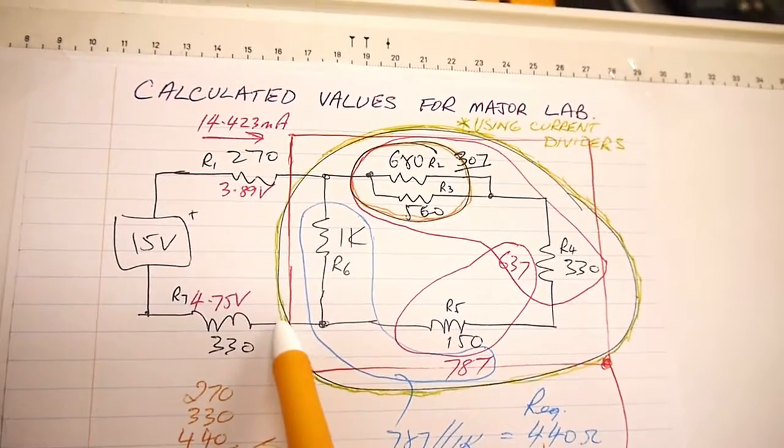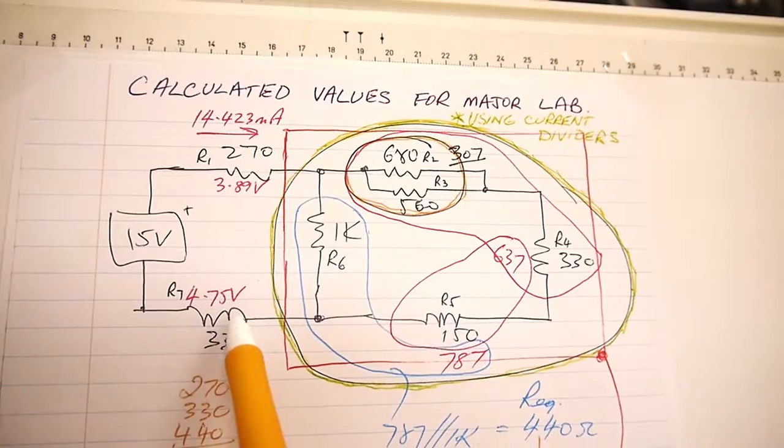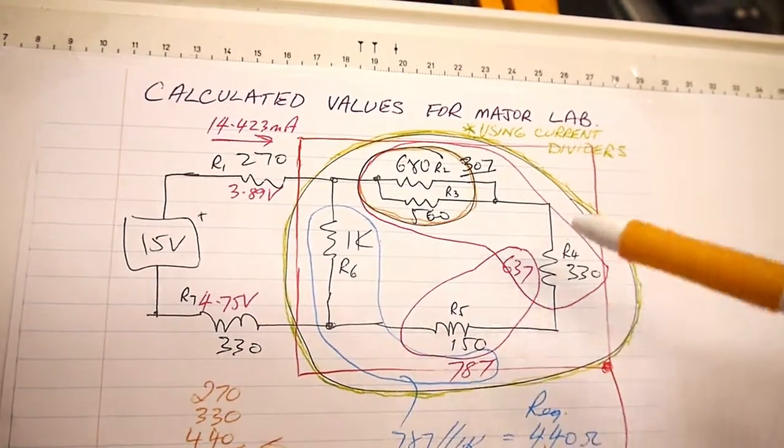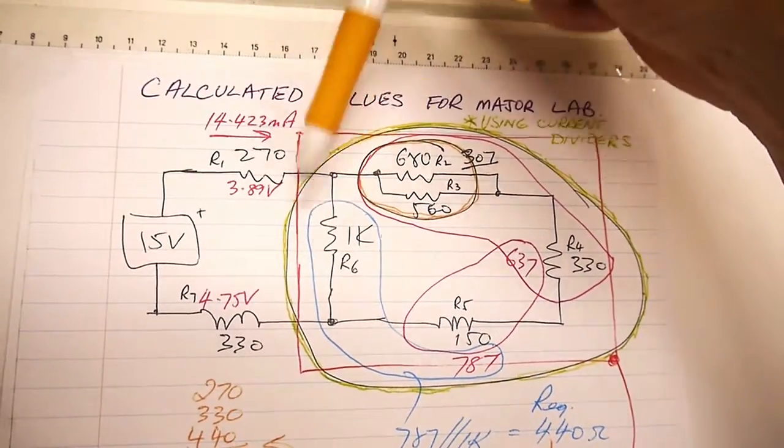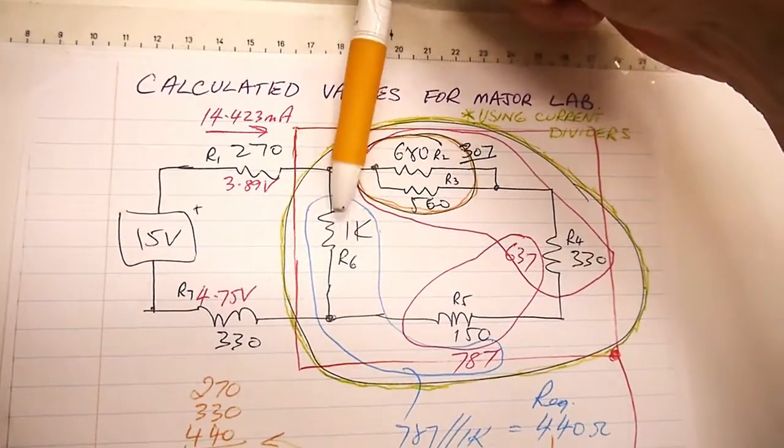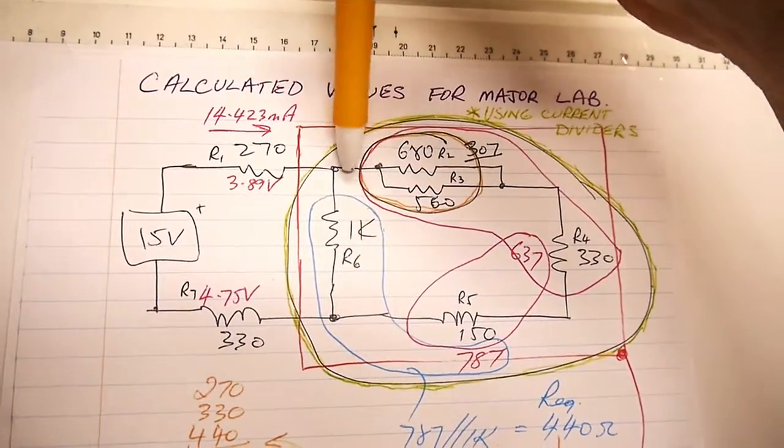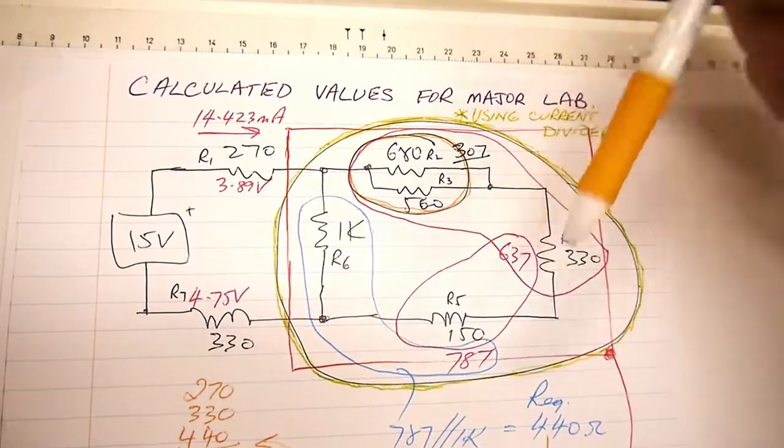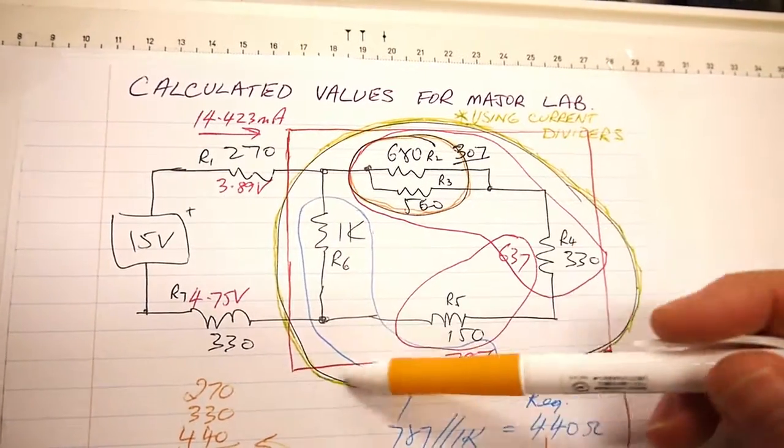We've got one lot of current splitting from this first node, splitting down through the 1k and one lot splitting and going into this other part of the network over here. I've drawn a bit of a red box around here.